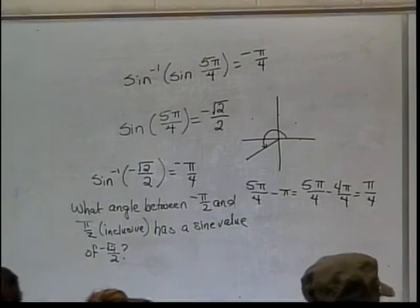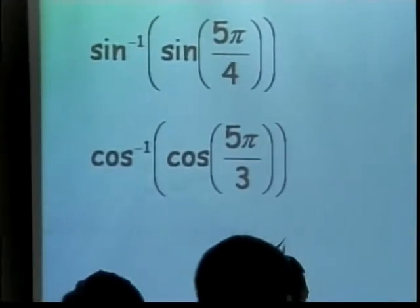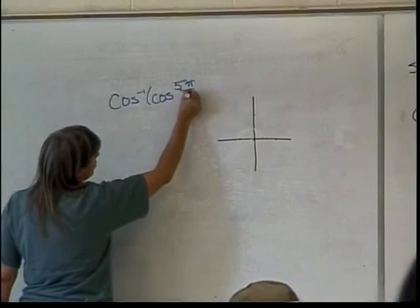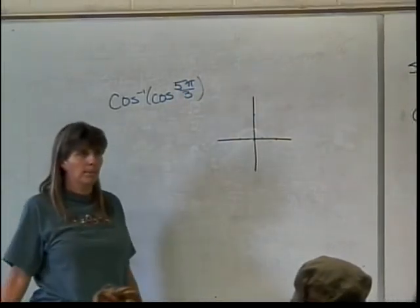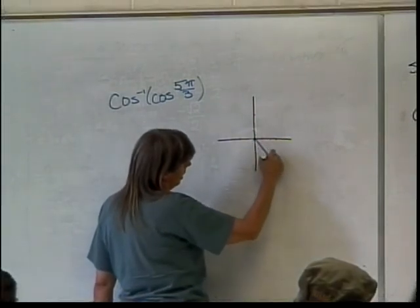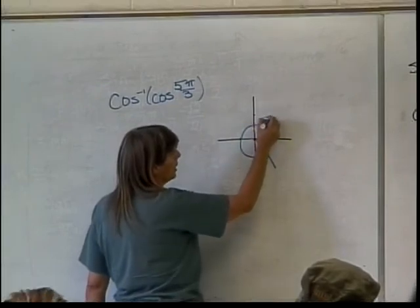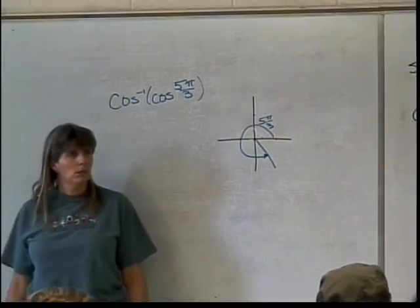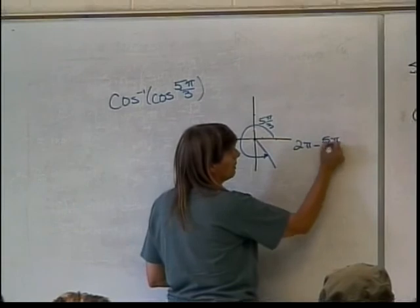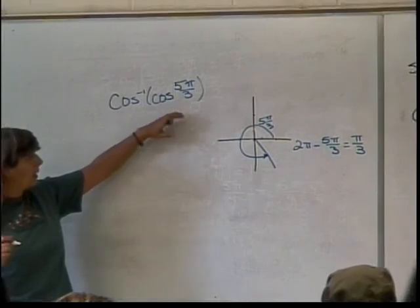Alright. Now that I did that one, why don't you do this one? Go right ahead and have fun. Cosine of 5 pi over 3. Where's 5 pi over 3? Fourth quadrant. So we work our way around. We're approximately right here, going this direction. So there's my 5 pi over 3. What's my reference angle? Pi over 3. It's gotten by doing 2 pi minus 5 pi over 3. That gives me pi over 3.